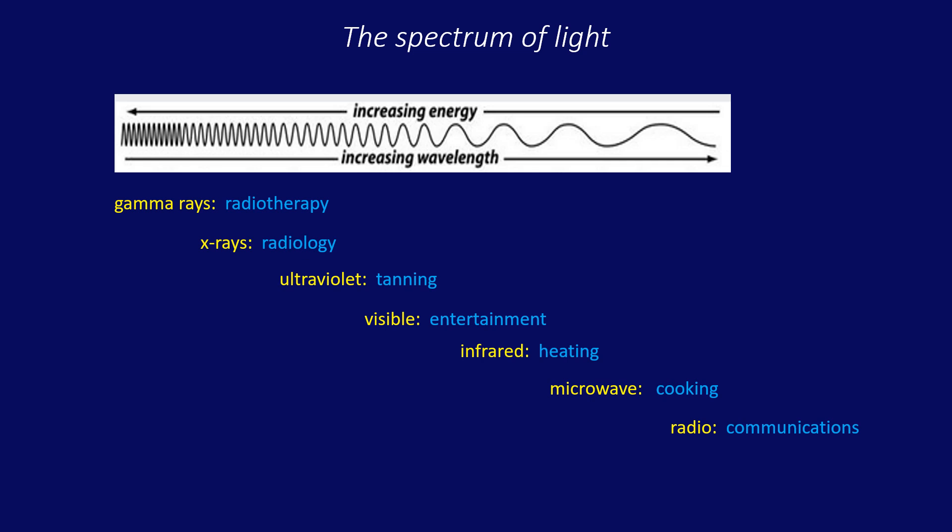Of course, making use of these electromagnetic energies requires that we understand how they work, their advantages, disadvantages, and dangers. Visible light is the most familiar to humans, while infrared and microwaves have even become common for heating and cooking in our homes.